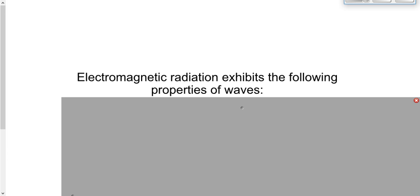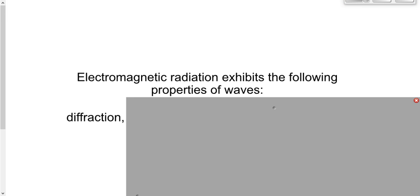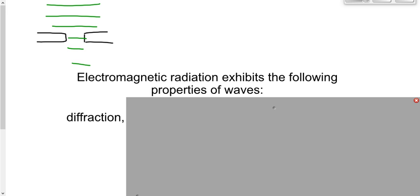If you remember from Physics 20, a concept called diffraction. Diffraction was the spreading out of a wave. If we had an opening and a wave coming towards it, part of it would go through, and once it got through, it would spread out. That's diffraction — a property of waves that's exhibited by EMR. So that must mean that EMR is a wave.